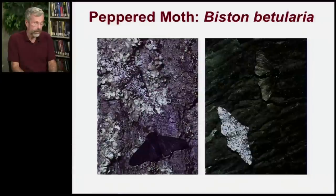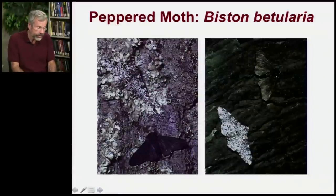Another classic example of natural selection over a very short time period involves the peppered moth, Biston betularia. The normal form looks like this, which is very hard to see against lichen on a tree trunk.